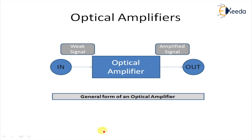This diagram shows the general form of an optical amplifier, in which a weak input signal is amplified and transmitted over a longer distance. An optical amplifier can be employed in three ways between the transmitter and the receiver to achieve desired signal amplification. The first is a booster or power amplifier, which requires boosting the power of the signal.